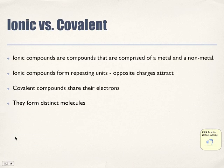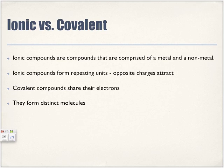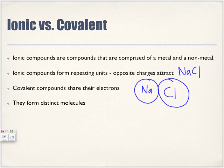Now, ionic versus covalent compounds. Ionic compounds are comprised of a metal and a nonmetal, and they form repeating units because opposite charges attract. For example, in sodium chloride (NaCl), sodium has a positive charge and chlorine has a negative charge, so there is an attraction between them. Another Na and another Cl are then attracted, because the negative Cl is attracted to the positive Na.